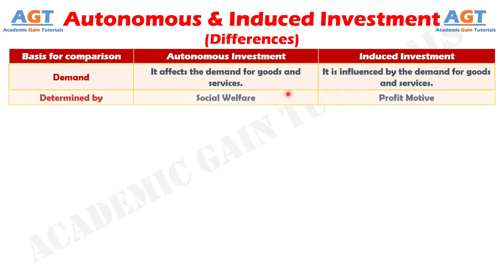Difference Number 7: Autonomous investment is undertaken by the government with a social welfare perspective, whereas induced investment is made with a profit motive in mind. It can also be said that it is the profit which induces the investor to invest.